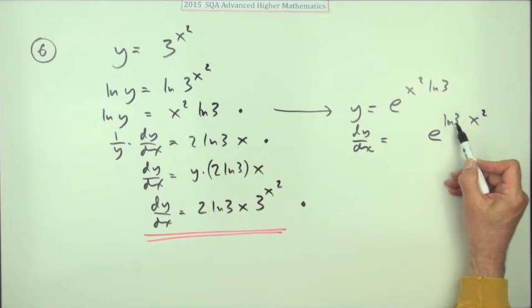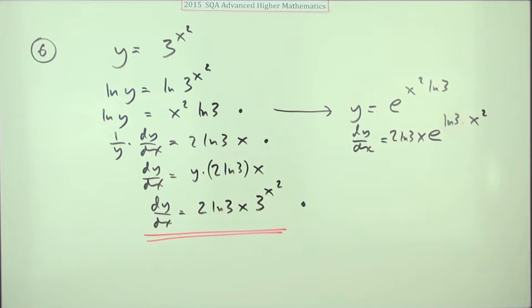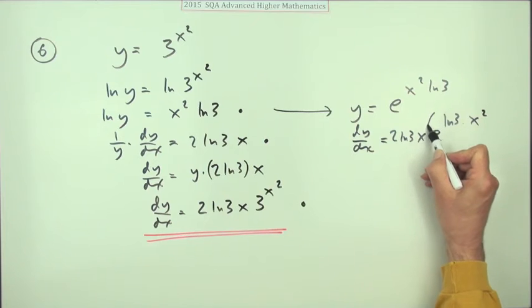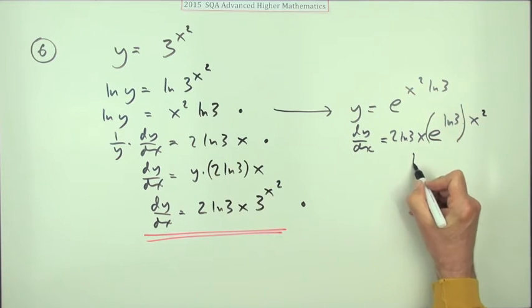And of course that's just a constant and the derivative of that will be 2 ln 3 x, 2 ln 3 x. And they seem to allow this as the final answer, but it's not really simplified.